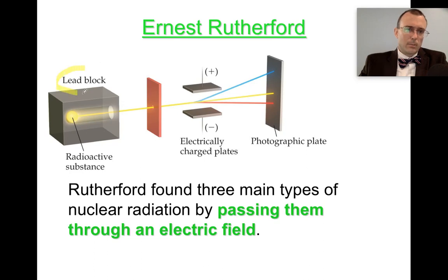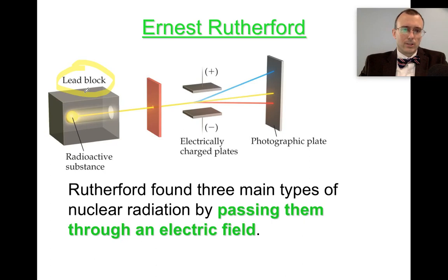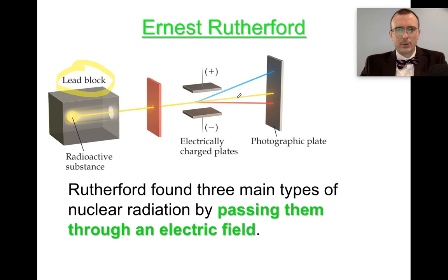and he stuck it in a lead block. The lead block was basically used to block as much of that nuclear radiation as possible, so that all it did was come out through this hole. Then he had another sheet of lead with a very, very small hole there, so he had a nice fine beam of nuclear radiation. And then he passed it through an electric field, and he also tried passing it through a magnetic field.